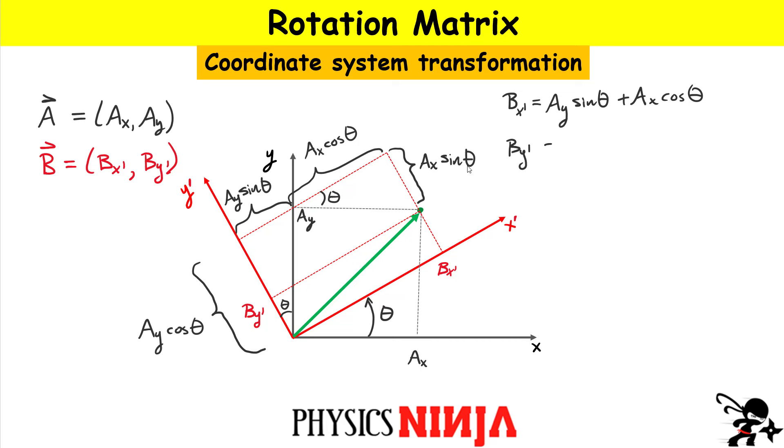All right, what about BY prime? BY prime is a little bit more difficult. BY prime is small right here. It's only this one. But again, you should be able to write it as the total distance here minus this other section over here. So make sure you understand this. So this is AY cos of the angle theta and then minus AX sine of the angle theta.